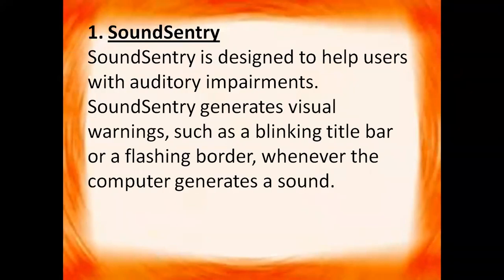Now we will move to the next option: the Sound tab. In the sound tab we will get options related to sound. It has two options: Sound Sentry and Show Sounds. Sound Sentry is designed to help users with auditory impairments. Sound Sentry generates visual warnings such as a blinking title bar or a flashing border whenever the computer generates a sound. So instead of hearing the sound, they can see the messages.